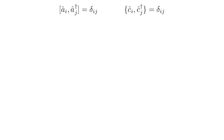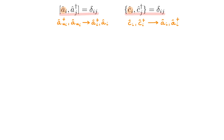We start by manipulating creation and annihilation operators to derive a very useful result needed later on. Here we have the commutation relation for bosons and the anticommutation relation for fermions. We simplify the notation by replacing a_{u_i}^† and a_{u_i} by a_i^† and a_i, implicitly working in the same basis throughout. We typically use the letter a for bosons and c for fermions, but today we use the letter a for both types, replacing c_i and c_i^† by a_i and a_i^†, so we can write compact expressions valid for both bosons and fermions.